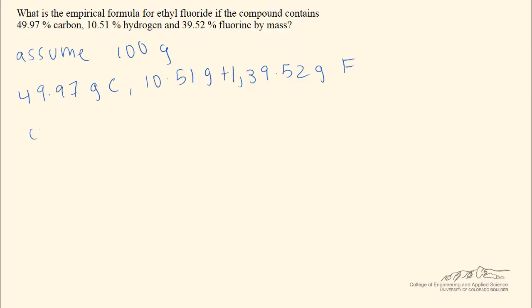The next thing we can do is convert each of these components in grams to moles. And you'll see in the third step why this is so important. So we can start by taking 49.97 grams of carbon and using a conversion factor. We know that one mole of carbon consists of 12 grams of carbon, and this can be found on the periodic table. And we know that that means we have 4.164 moles of carbon based on our 100-gram assumption.